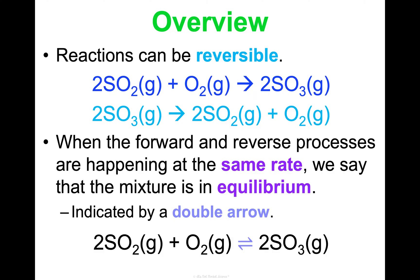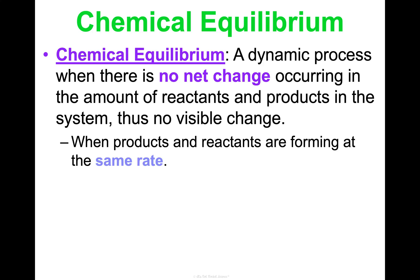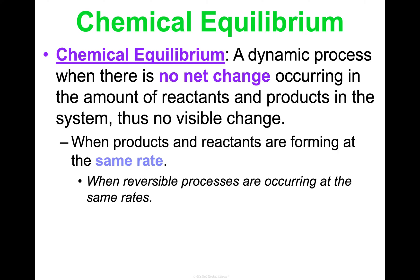Equilibrium is indicated by a double arrow. Instead of writing the reaction twice in both directions, we write it once and use this double arrow to represent that the reaction is going both directions at the same rate — forward and reverse. Our formal definition: it's a dynamic process, a back and forth, but overall there's no net change occurring in the amount of reactants and products in the system. No visible change is happening. Products and reactants are forming at the same rate.